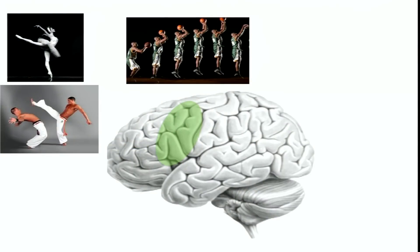Another group in Italy, run by Salvatore Agliotti, did a nice study with professional basketball players, asking whether they're better at predicting whether a shot will go in based on the action of the shooter. Professional basketball players were indeed better at predicting the outcome. But basketball players also have greater visual experience — so they controlled for this by including coaches and journalists who watch a lot of basketball. Those coaches performed better than naive subjects but worse than the basketball players. So motor expertise specifically influences how you perceive actions in the world.